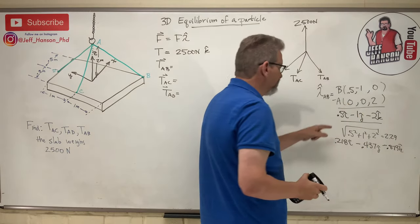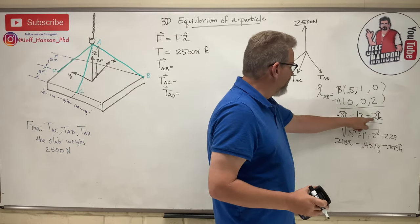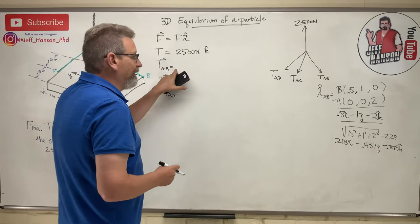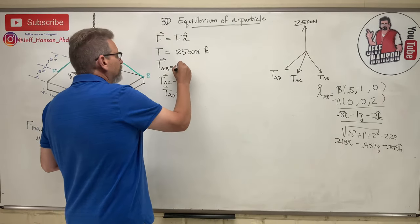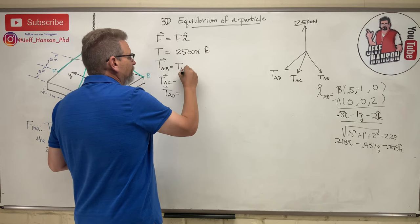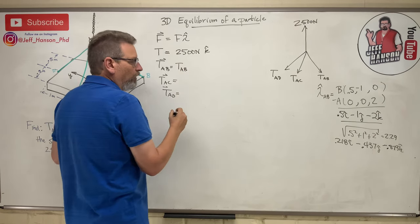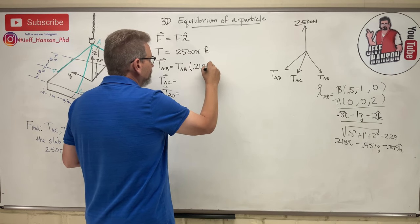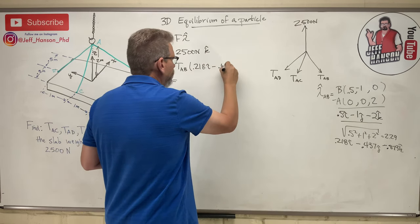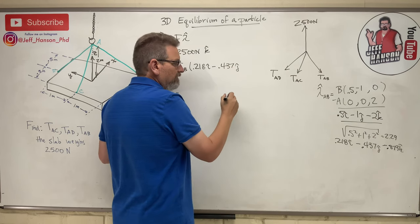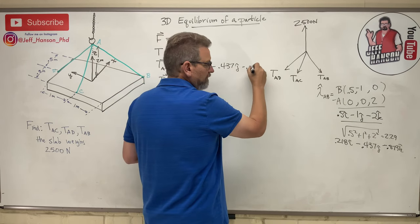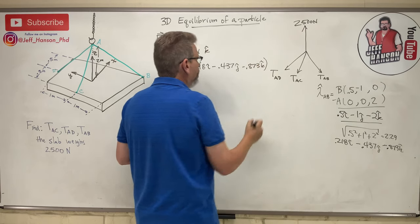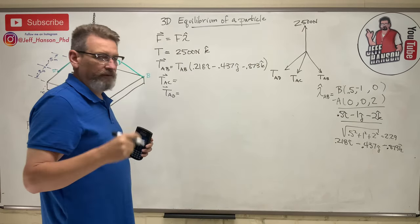Let's see what that is. Wake up calculator. My calculator is sick, I have to reset it every time. Here we go, 0.5 squared plus one plus four equals, and then second square root is 2.29.